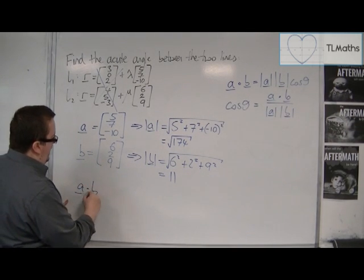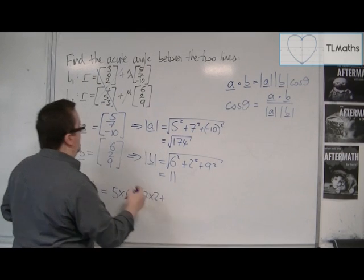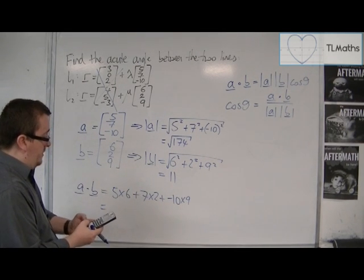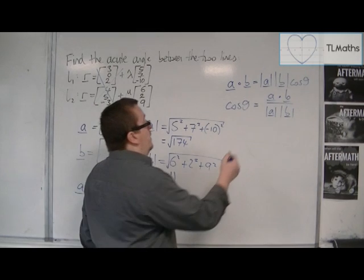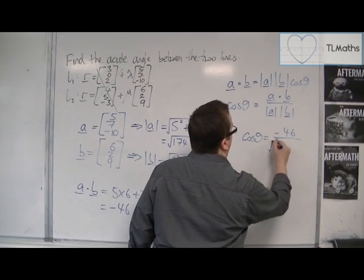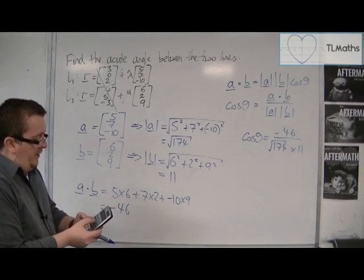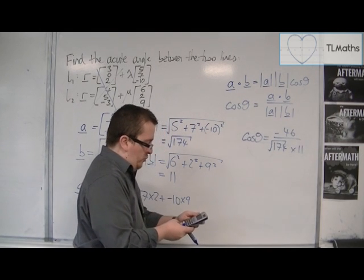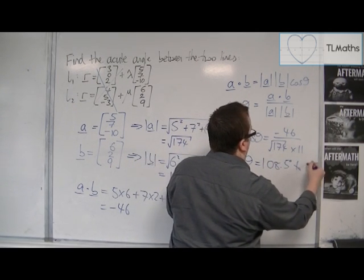And a · b is (5 × 6) + (7 × 2) + (−10 × 9), which gives me 30 + 14 − 90 = −46. So cos θ = −46 / (√174 × 11). I'm going to work that out and then take the inverse cosine of both sides, making sure my calculator is in degrees.